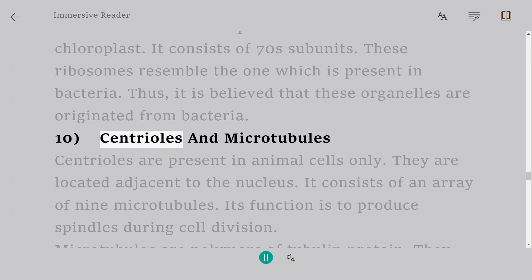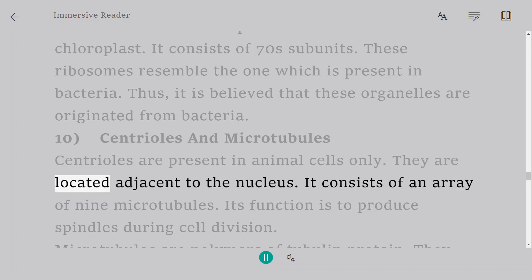10. Centrioles and Microtubules. Centrioles are present in animal cells only. They are located adjacent to the nucleus. It consists of an array of 9 microtubules. Its function is to produce spindles during cell division.